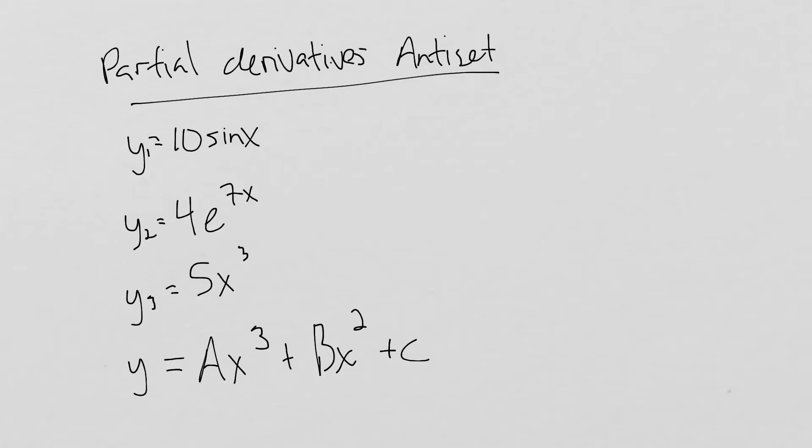So your anti-set right here is to take the derivative with respect to x. Just find the derivative of each of these functions: y1, y2, y3, and the one at the end, just y. So find the derivative of each of these. Pause and do it.